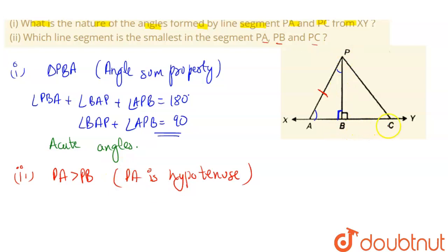Similarly, in triangle PBC, this is 90 degrees and the side opposite to 90 degrees is hypotenuse. PC is the hypotenuse. So PB will be smaller than PC as well. So that means PC is greater than PB. So from these two, we can see that PB is the smallest.